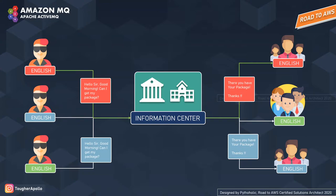User A and user C went to the information center and said, 'Can I get my package?' The information center forwarded their messages and they got the response back — 'There you have your package.' This is a basic communication channel between people who want information. They have been to the information center and received the information back. Here you didn't speak to the department directly, but you spoke to the information center, which in turn forwarded your request to the concerned department.